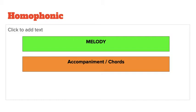Then we have homophonic, where there are two contrasting parts. It is generally the melody versus the accompaniment or chords, and that's what we call homophonic. So it's not someone singing melody in harmony, but someone singing melody with an accompaniment or chords.